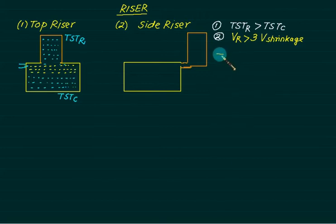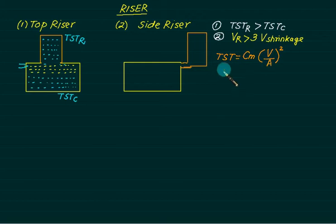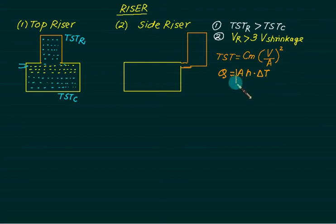According to Chvorinov's rule, the total solidification time equals the mold constant Cm (sometimes K) multiplied by (V/A) squared, where V represents the heat content and A represents the heat transfer area. If the heat transfer area is large, then TST is small, whereas we want the riser to have a large value of TST. Heat transfer Q is dependent on area multiplied by H multiplied by delta T. If we reduce the area, the heat transfer rate decreases, and automatically the solidification time increases.